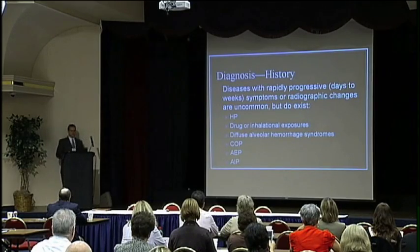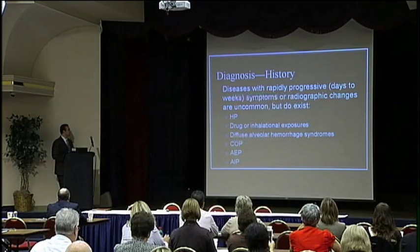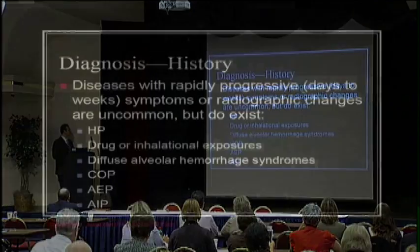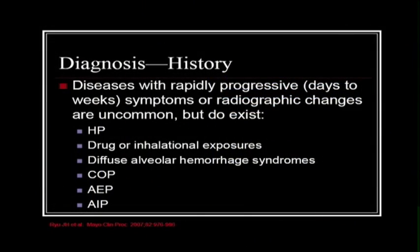Some diseases follow a rapidly progressive course, usually over days to weeks. These are uncommon but include hypersensitivity pneumonitis, drug or inhalational exposures, diffuse alveolar hemorrhage syndromes, cryptogenic organizing pneumonia, acute eosinophilic pneumonia, and acute interstitial pneumonitis or Hamman-Rich syndrome. If you see a rapidly progressive course, these are the diagnoses to consider.